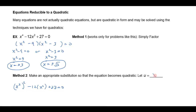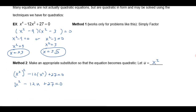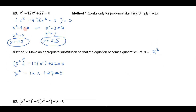So if I make the substitution u equals x squared, this is really quadratic — it's u squared minus 12u plus 27 equals 0. So this really is a quadratic equation, but notice I'm not just solving for u. I'll solve this quadratic equation, but ultimately I want to find x. I'll factor this, and it does factor as u minus 9 times u minus 3.